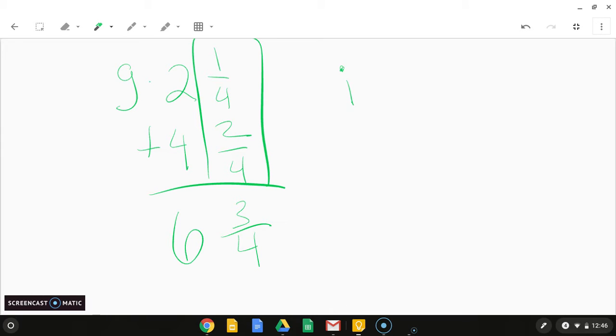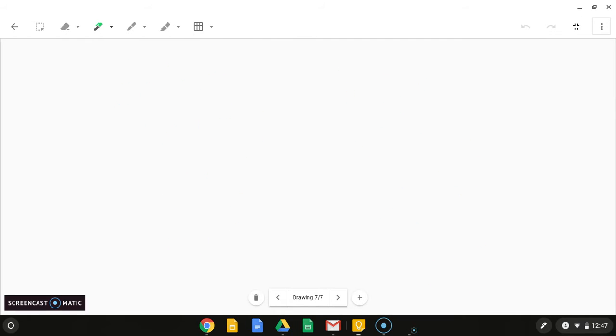And then i. So i, we have eight plus one and two-fifths. If we don't have a fraction over here, it just stays the same. It's just two-fifths plus nothing is two-fifths. And then eight plus one is nine.